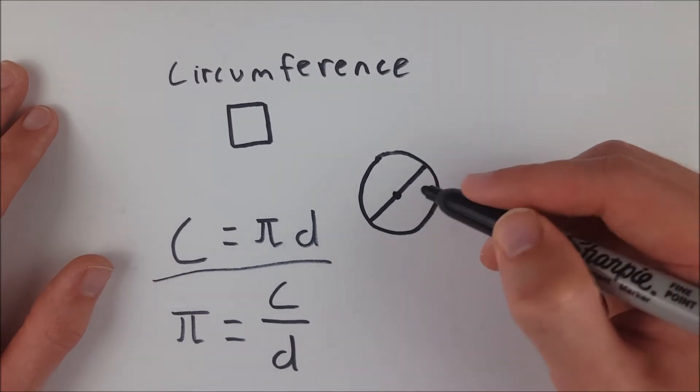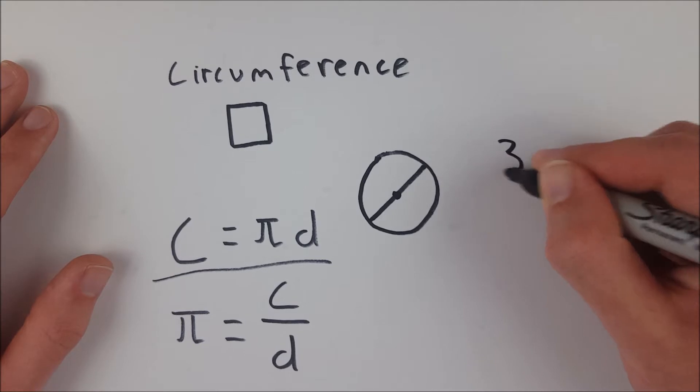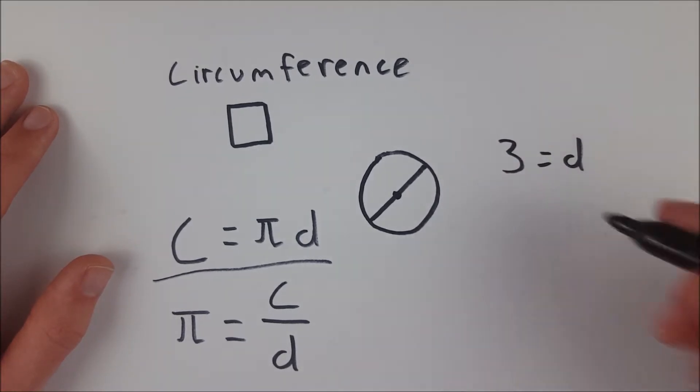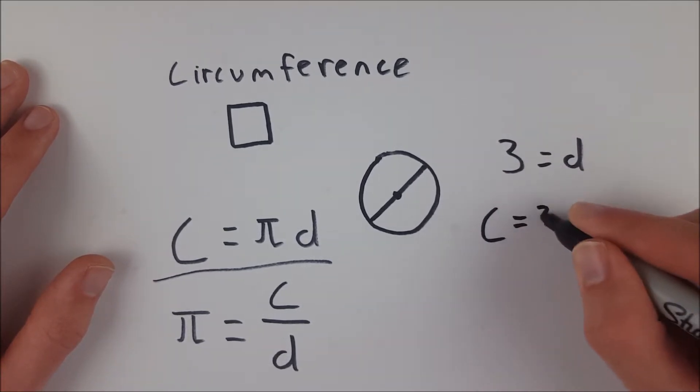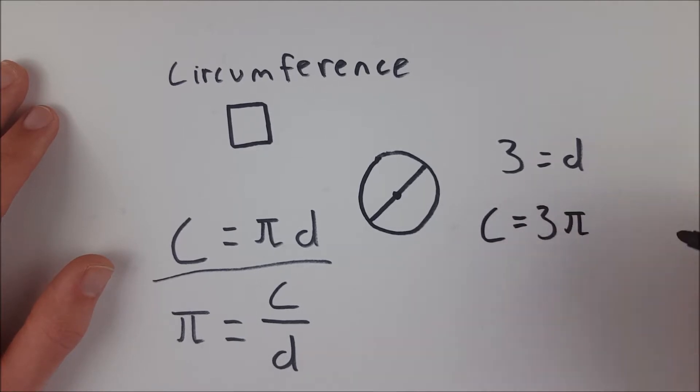So if you take the length of this diameter, say it was 3, if that was the length of d, then the circumference would just equal 3 times pi. And this would be around 9 and a third.